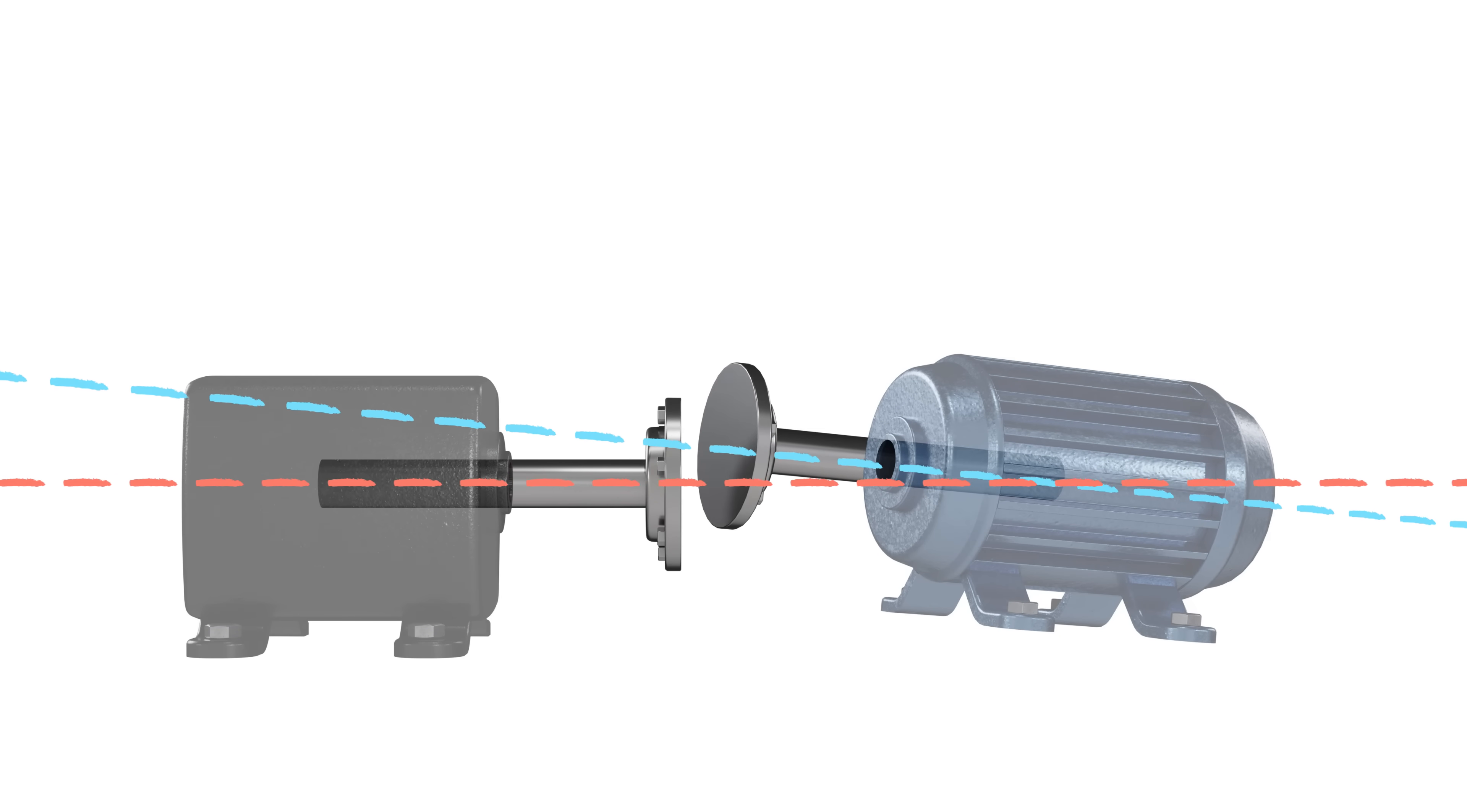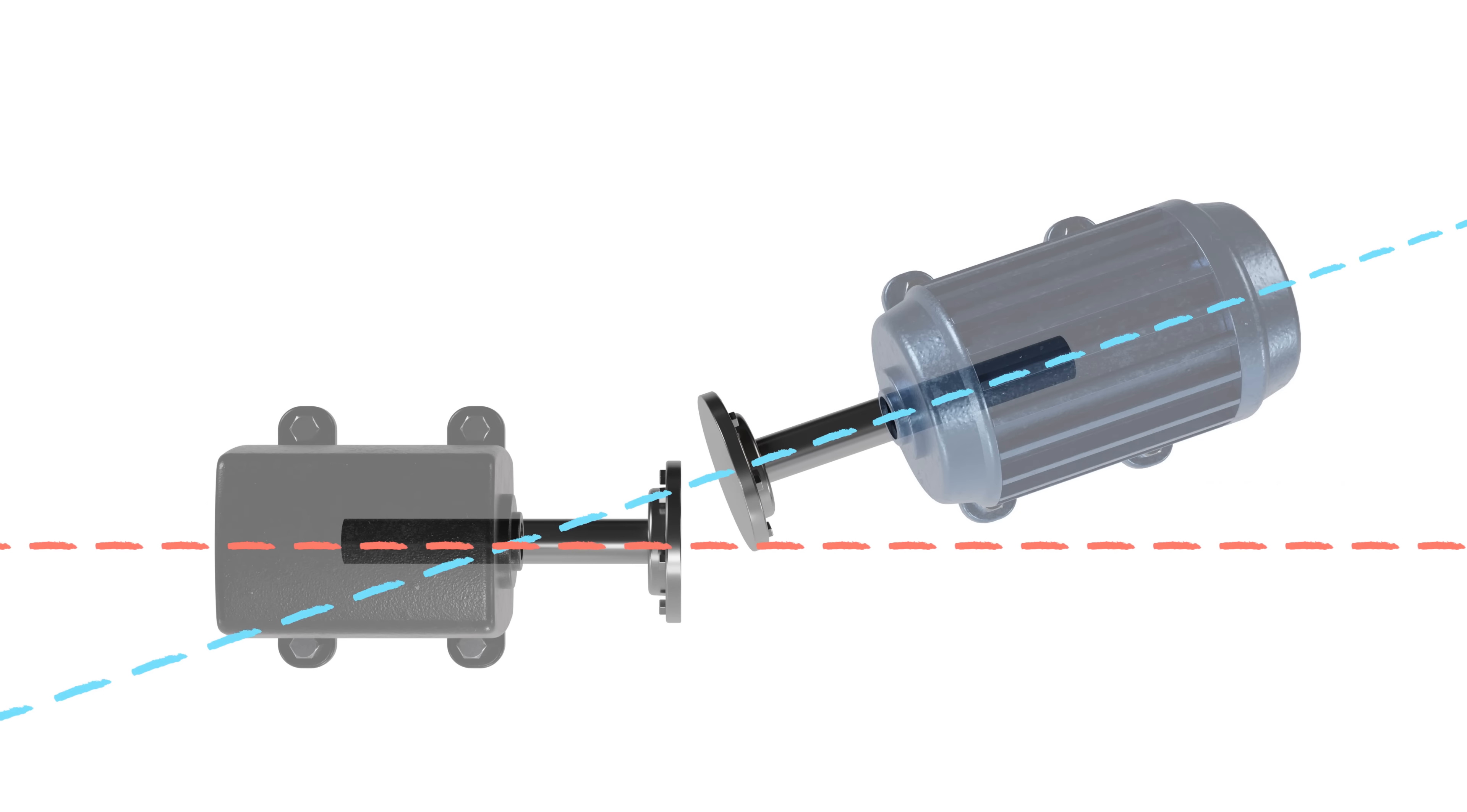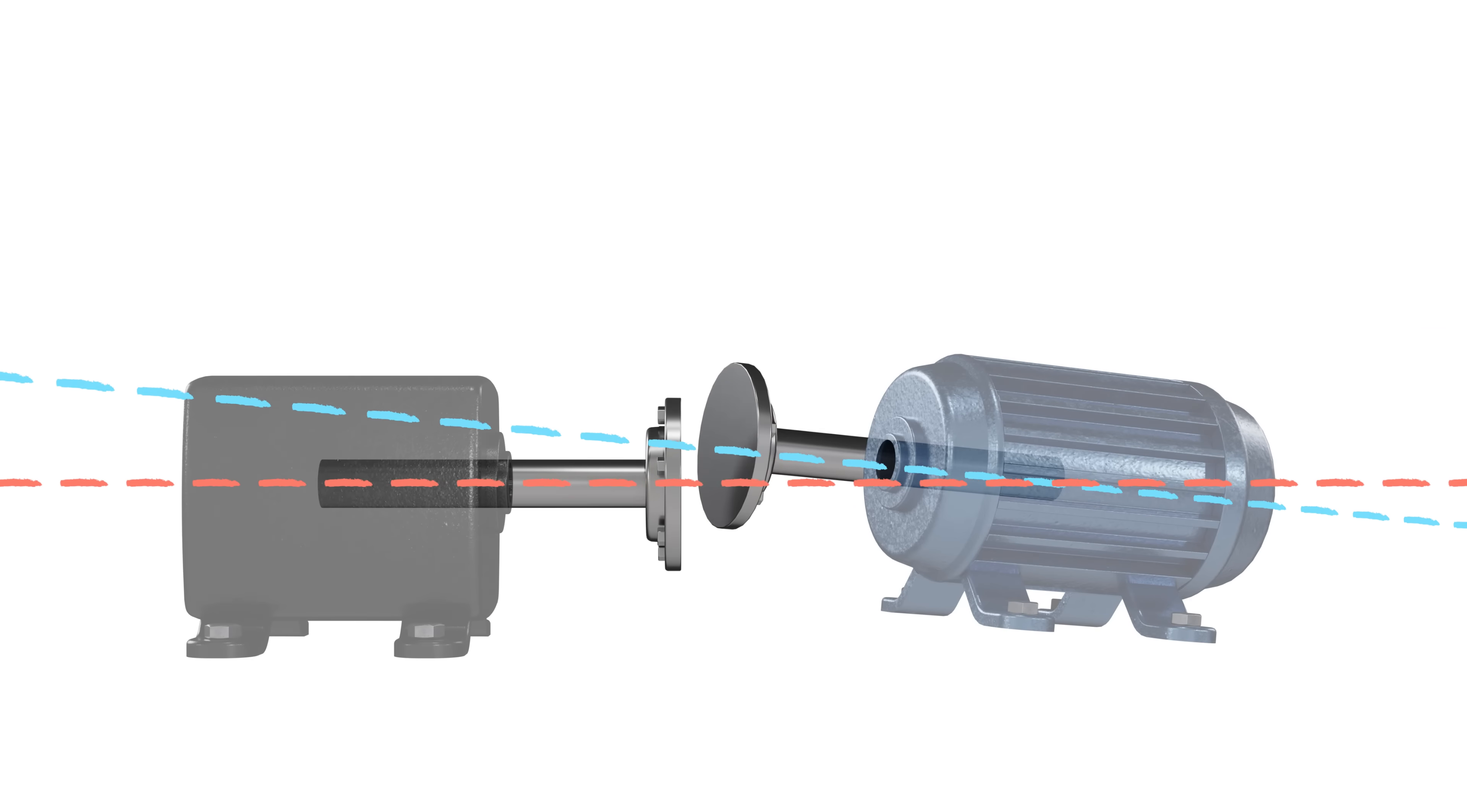What we typically see in the field is a combination of both offset and angular misalignment, occurring in three dimensions, as you can see here, as we rotate between the vertical plane and the horizontal plane.